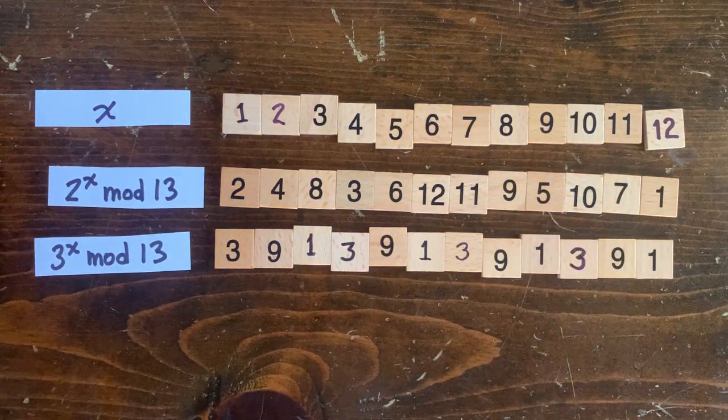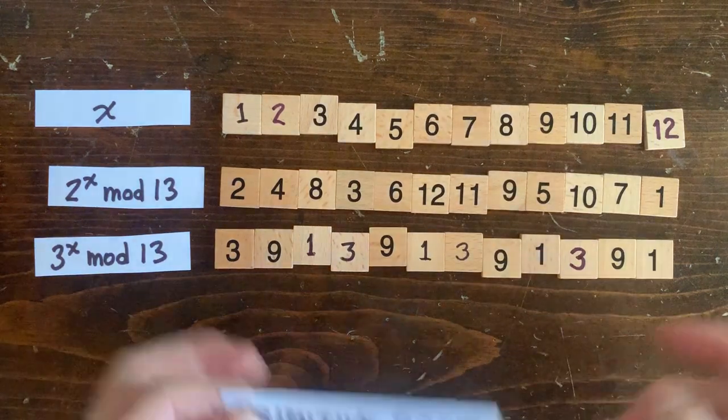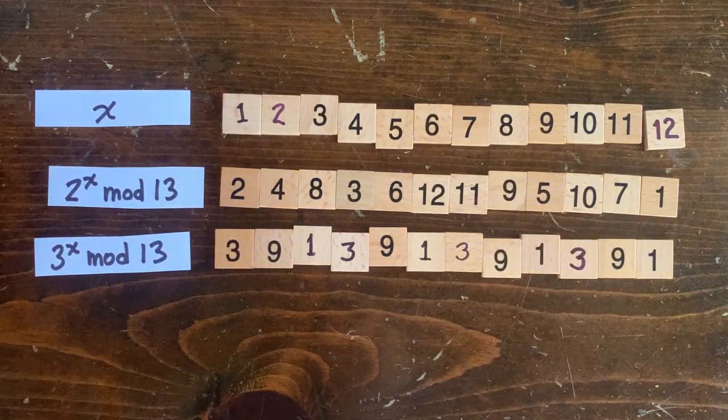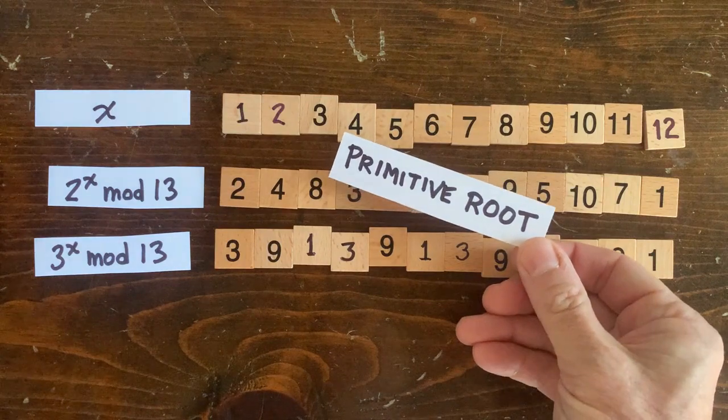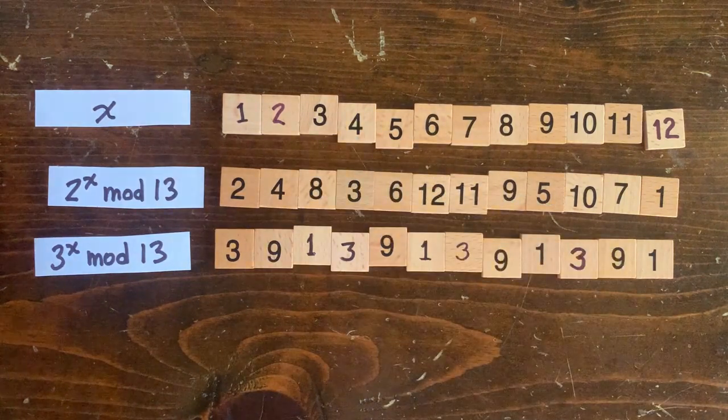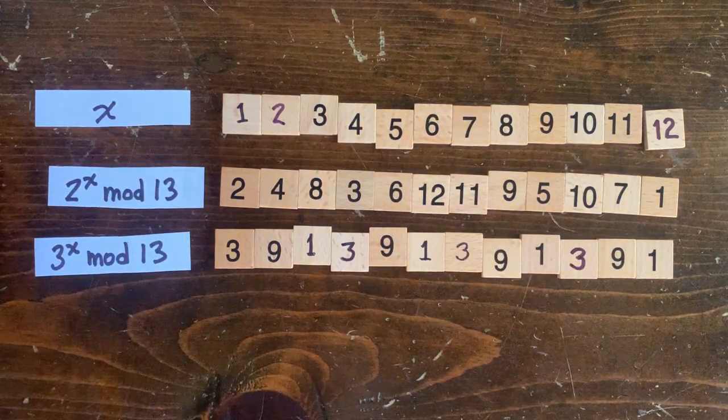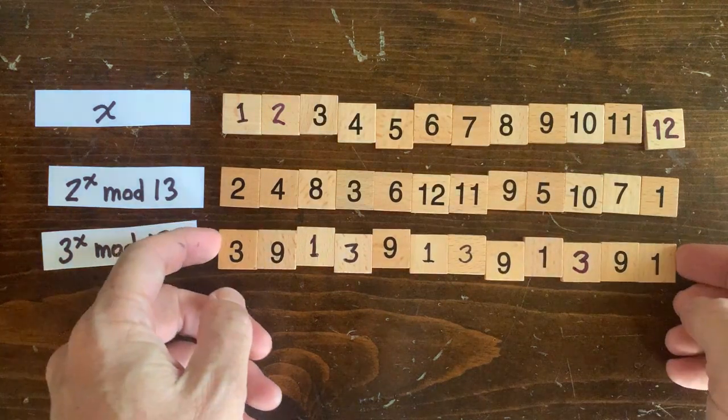Now in this row for 2^x mod 13, you can see that every number between 1 and 12 is represented. That means 2 is a primitive root of 13. 3 is not a primitive root of 13, and you can see that the remainders are limited to just 1, 3, and 9.